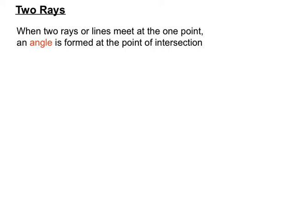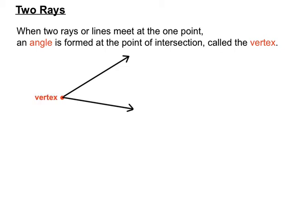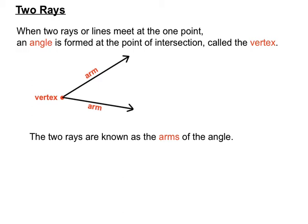When two rays meet at one point, an angle is formed between them at the point of intersection, and we call that point of intersection a vertex. So here's one ray starting at the red dot, and here's another ray — they have a common starting point, which we call the vertex. The two rays themselves have a special name: they're called the arms of the angle. The lines section of the angle, they're called arms — the arms of the angle.